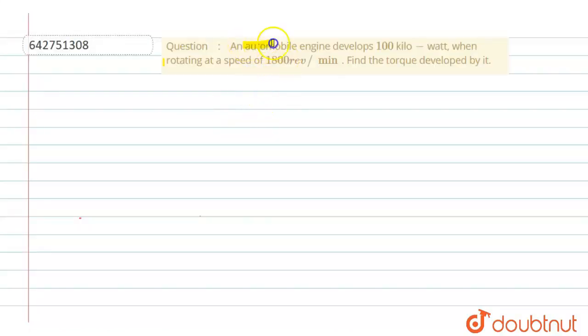In this question, it is given that there is an automobile engine which developed 100 kilowatt power when it's rotating at a speed of 1800 revolution per minute. So in this question, we will calculate the torque developed by this engine.